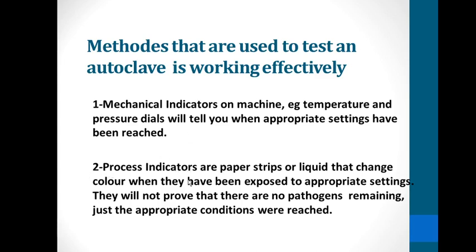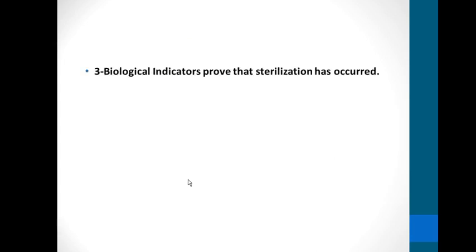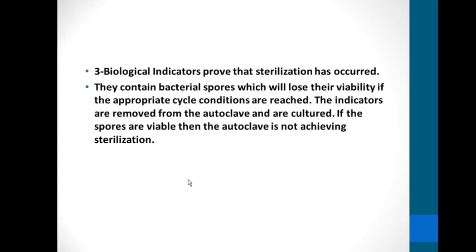The third type, and most important, is the biological indicator, which actually proves that sterilization has occurred. This is a very important method for testing whether the autoclave is functioning well. They contain bacterial spores which will lose their viability if the appropriate cycle conditions are reached. The indicators are removed from the autoclave and cultured; if the spores are still viable, then the autoclave is not achieving sterilization.